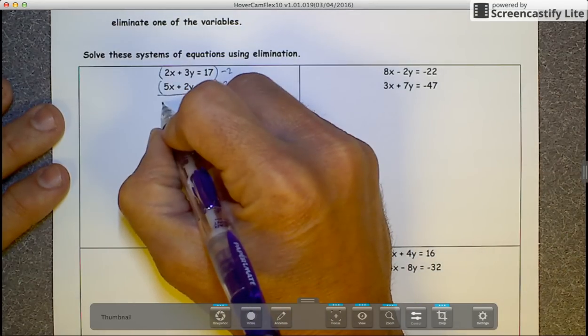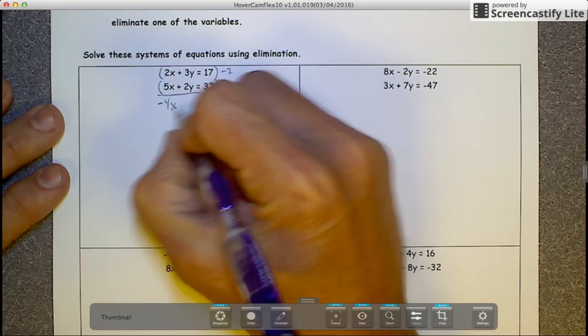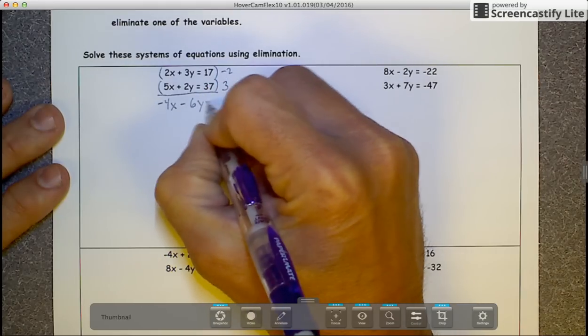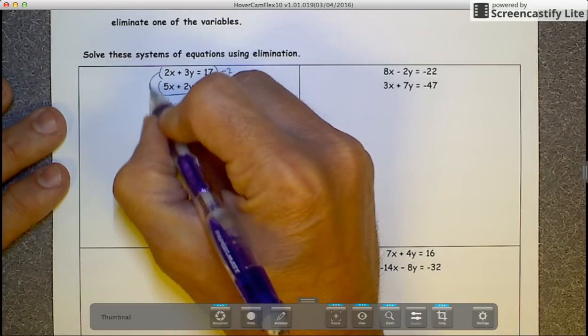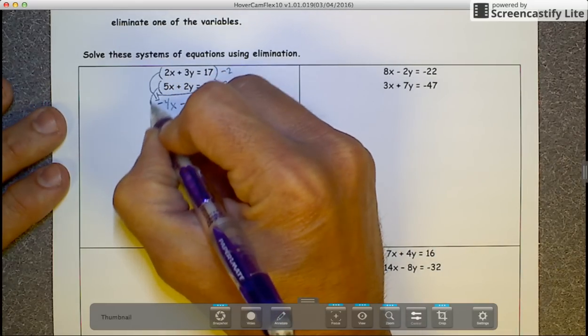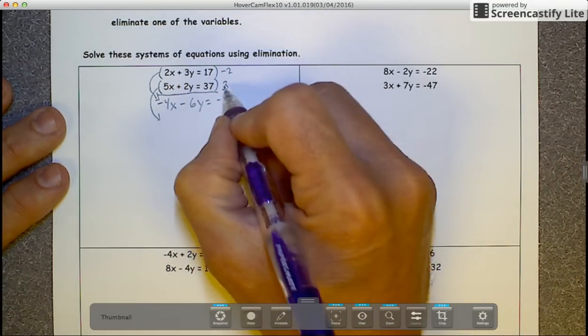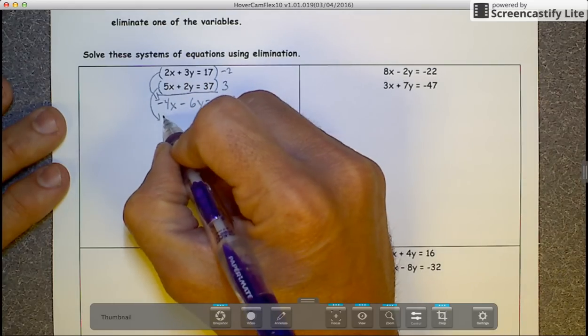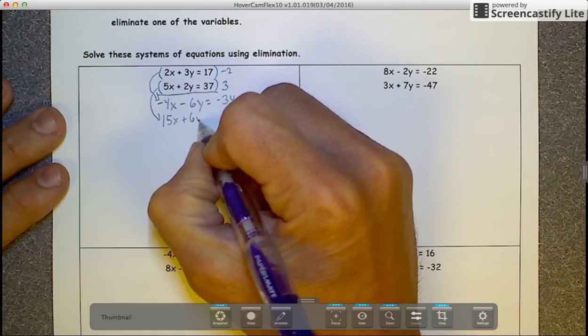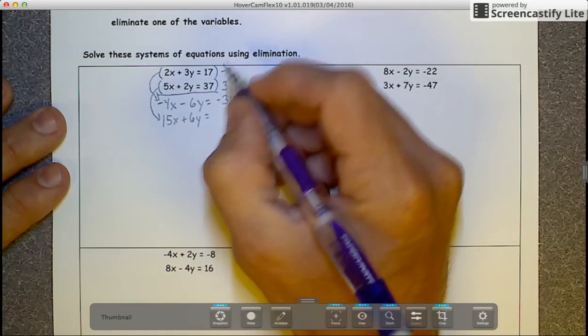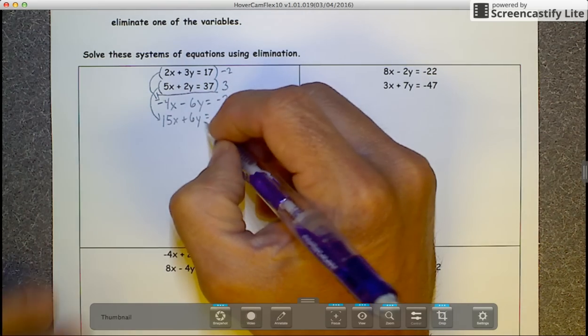Negative 2 times 2x would be negative 4x minus 6y equals negative 34. That is this equation. The second equation: 3 times 5 is 15x plus 6y equals 37 times 3 is 111.